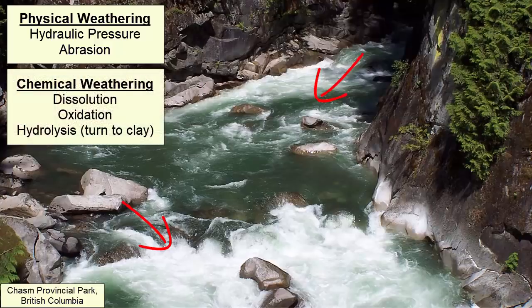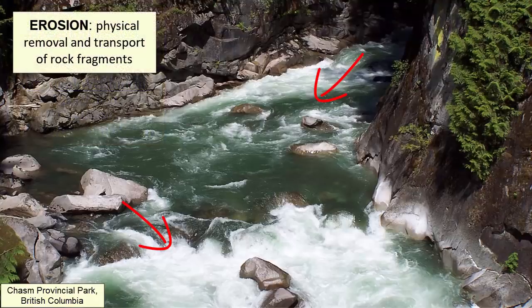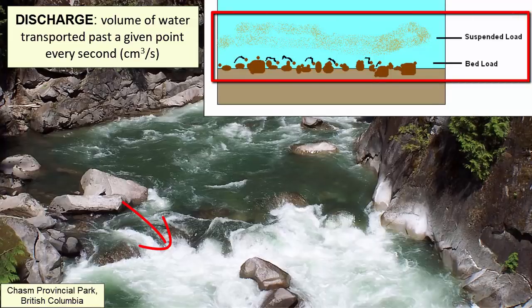Chemical weathering is aided by water, so when rivers put water in continual contact with solid rock, they increase the rate at which that rock chemically breaks down — primarily through minerals dissolving, oxidizing, or turning into clays. Once rocks have broken down through any activity, the river will pick up those weathered pieces and transport them. Discharge is the volume of water a river transports past a given point every second, measured in cubic meters per second. The higher the discharge, the more sediment load a river can carry. The maximum sediment load a river can carry is called its capacity.